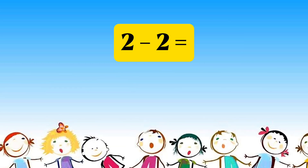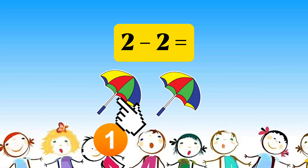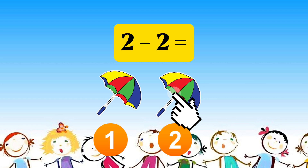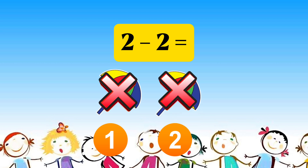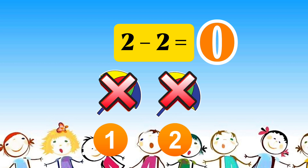Two minus two equals one, two. Less two equals zero.